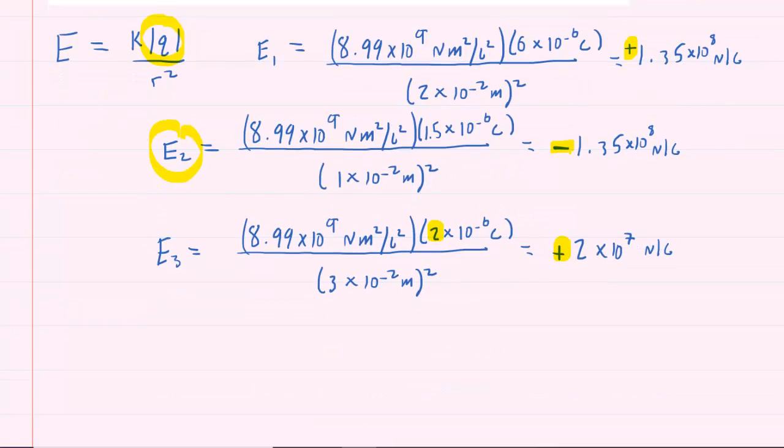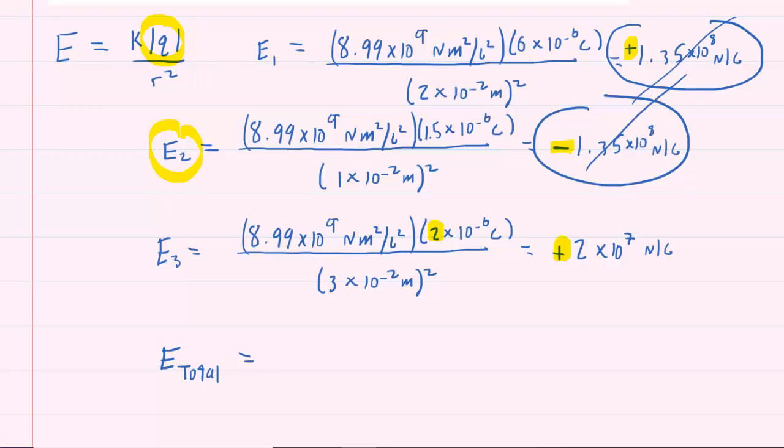So now we're ready to add these three electric fields together to get the total electric field. So to get the total, we're going to add all three values together. Actually, you'll notice that when you add these two values together, because they're opposite signs but equal magnitudes, they actually will cancel each other out. So the total electric field is simply 2 times 10 to the seventh newtons per coulomb. Remember it was positive, so that means that it will point to the right. So that's the final answer for part A of the question.